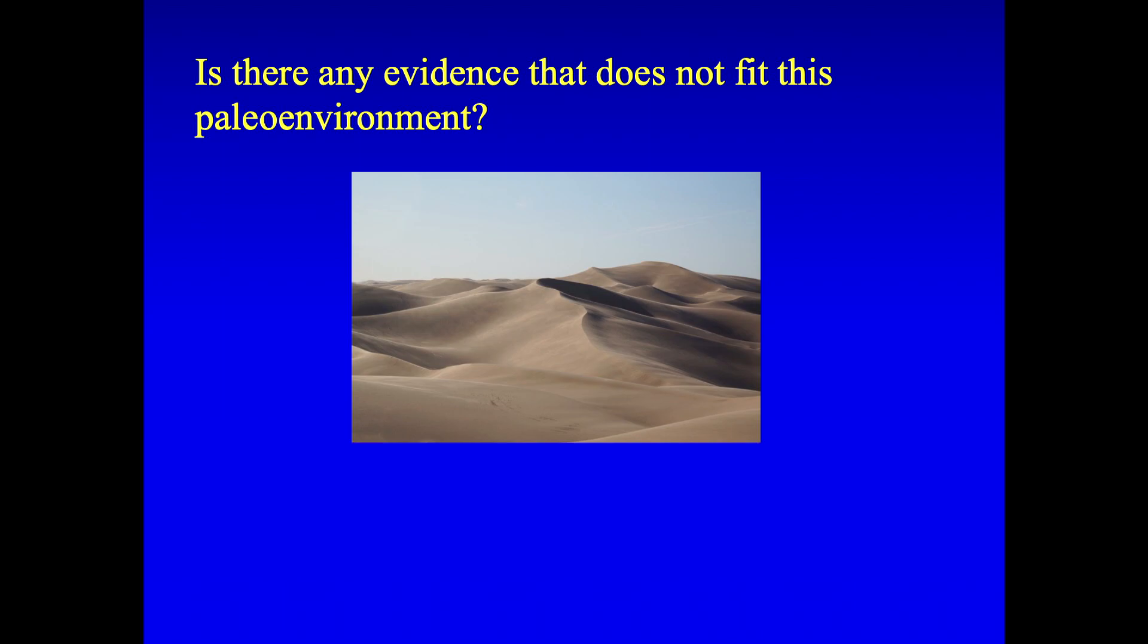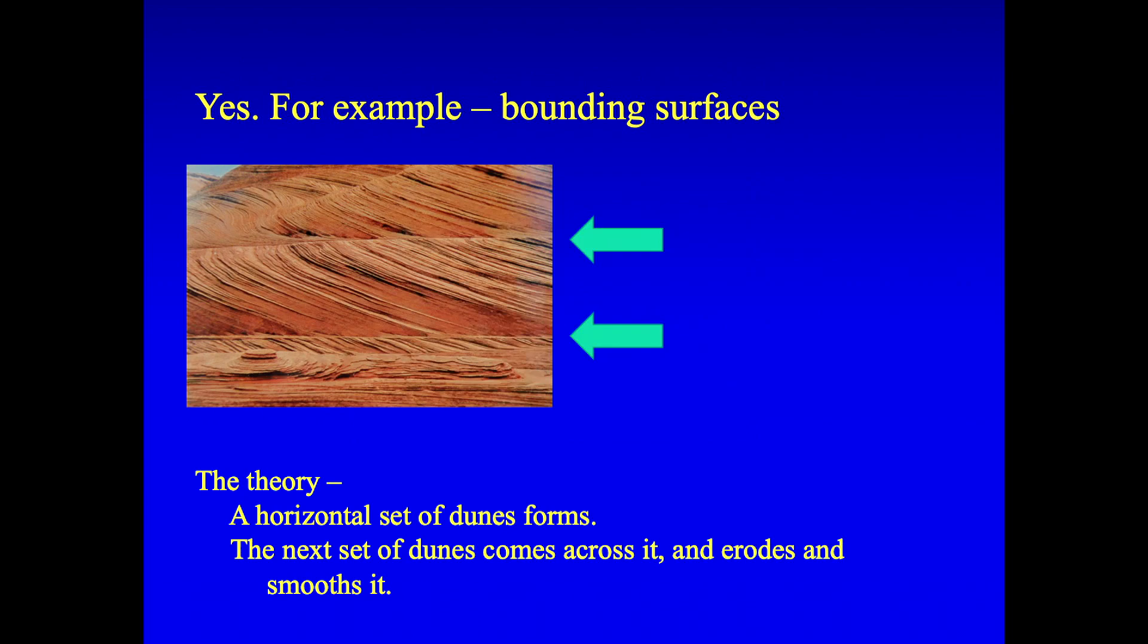So, is there any evidence that does not fit this paleoenvironment? Well, yes, there definitely is. In fact, there's a whole series of them, but I'll just mention this one. You see a picture of the side of a deposit with these sets of crossbeds going across. There's a set of crossbeds capped by a horizontal surface, then another set capped by a horizontal surface. So they're divided into these sets. And the horizontal lines are called bounding surfaces. So to do this, what has to happen is a dune, a set of dunes is moving across the area depositing these surfaces. And then another dune comes on the top and shaves off the top and smooths off the top and makes one of these bounding surfaces.